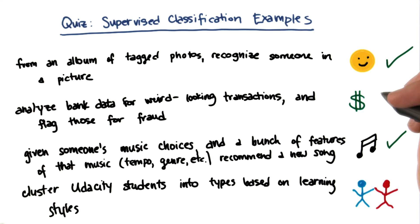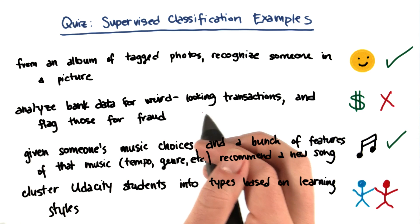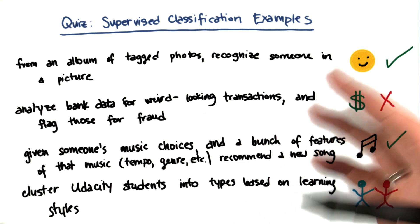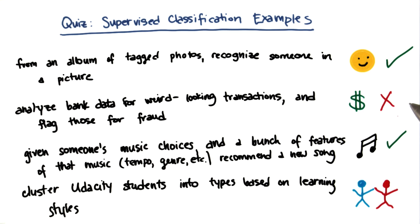Fraud is probably not an example of supervised classification, because we haven't really defined what a weird-looking transaction is. We don't have an example of what that might mean. There are ways you could still do this, but this would be an example of unsupervised learning, which we'll talk about more later in the class.